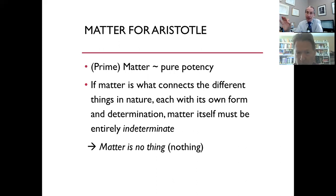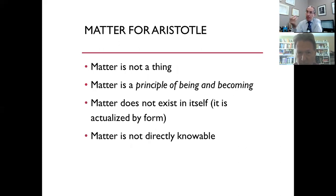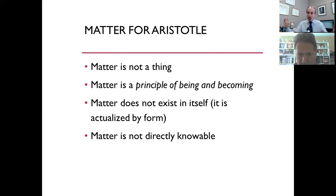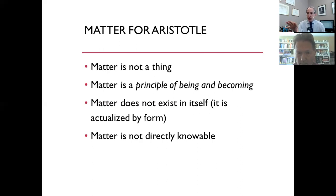So if matter is what connects the different things in nature, each with its own form and determination, matter itself must be entirely indeterminate. And for Aristotle, matter is no particular thing. Matter is not a thing — it is a principle of being and becoming. In this lecture I'm going to elaborate a little bit on this idea of what a principle is. It's a principle of being and becoming, and it's an incomplete principle, because substantial form is the other side of the coin. Substantial form is also an incomplete principle of being and becoming. Matter does not exist by itself; it is actualized by form. So it's the conjunction of matter and form that gives rise to existing things. And therefore matter is not directly knowable — I cannot look around and find pieces of matter floating about, because matter does not exist in itself; it exists in existing things.